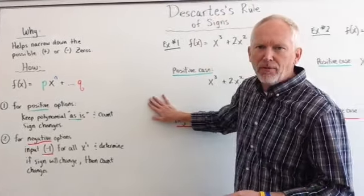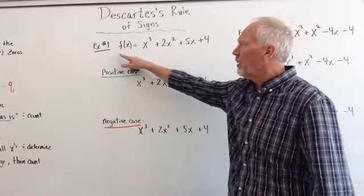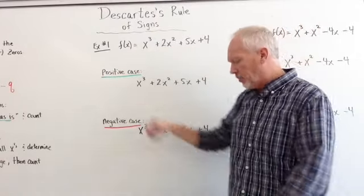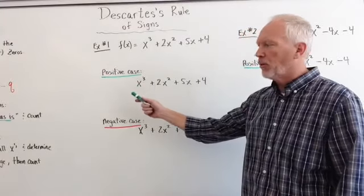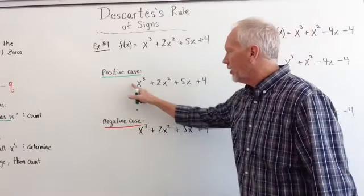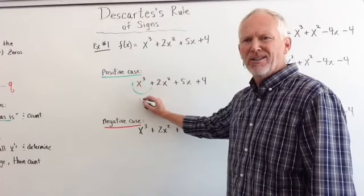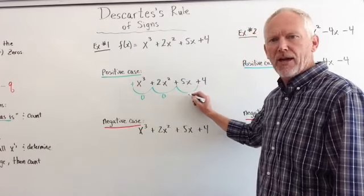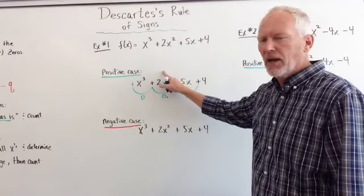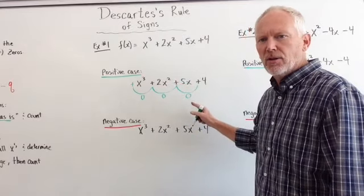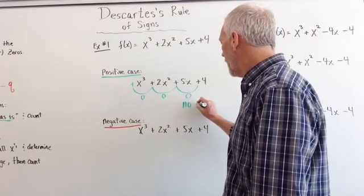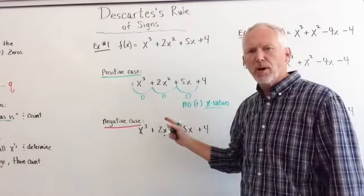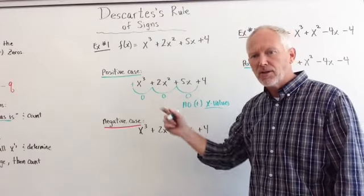Let's look at example one. f(x) = x³ + 2x² + 5x + 4. I'm going to look at the positive case first — we keep the polynomial as is. Here we go: positive to positive, no change; positive to positive, no change; positive to positive, no change. So in the positive case, there are no sign changes, meaning there are no positive zeros. When I go to do synthetic division, I only have to rely on negatives. It's a cubic, so we can expect up to three possible x values.